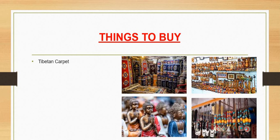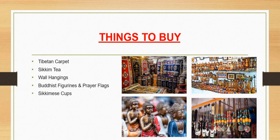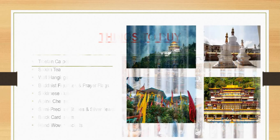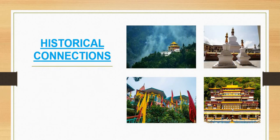Things to buy in Gangtok include Tibetan carpets, Sikkim tea, wall hangings, Buddhist figurines, prayer flags, alpine cheese, semi-precious stones, silver jewelry, black cardamom, and hand-woven jackets.